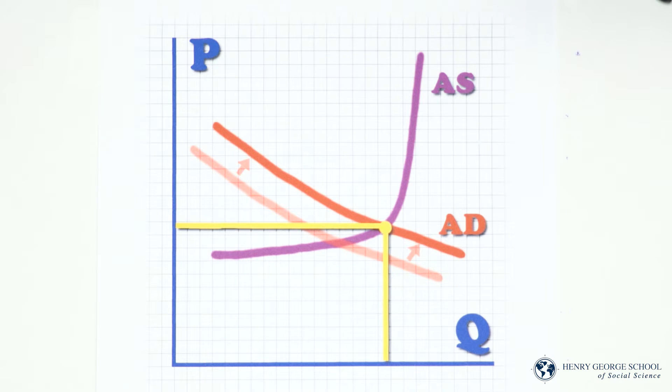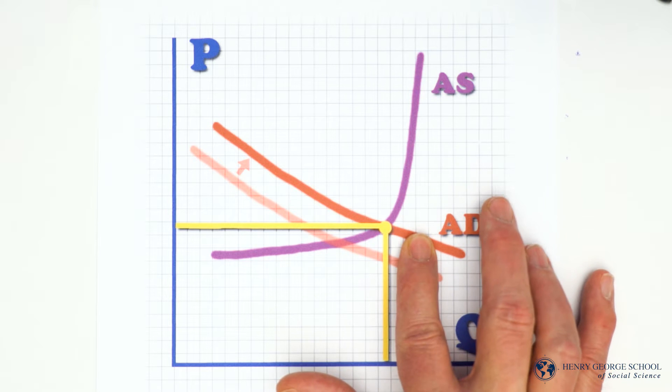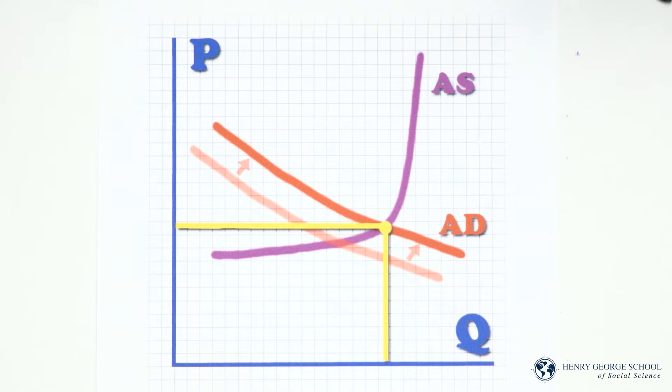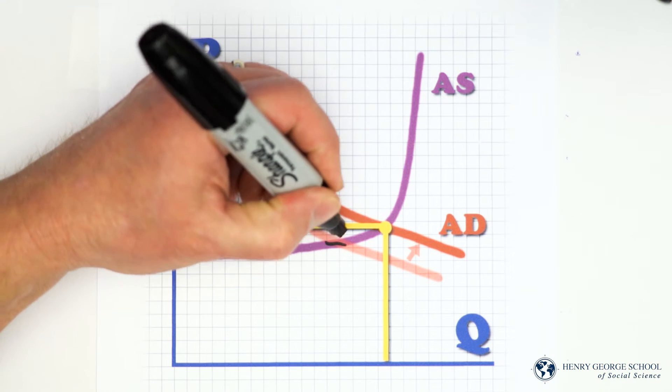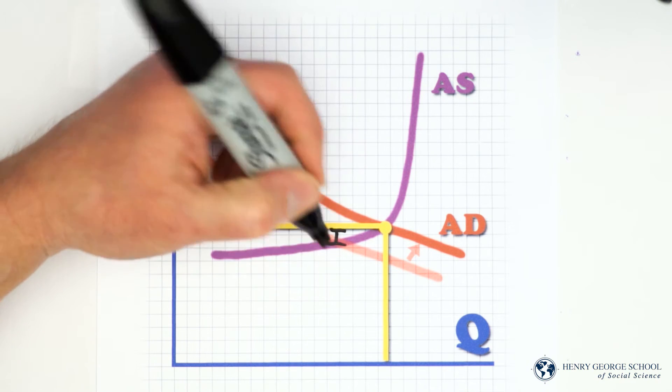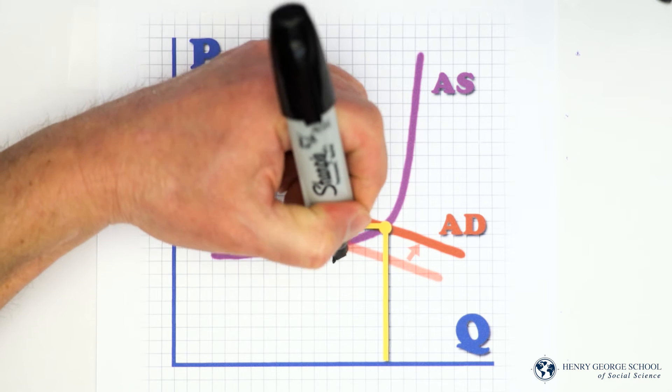As things start out, let's say times are good. People have jobs, they're making good money, houses are being built, and parents are buying their kids lots of Christmas presents. People want more stuff, and they're willing to pay for it. So the demand curve shifts up. There's more demand for goods and services. Note the new point of equilibrium. Prices have increased, but only very modestly. Output has increased quite a bit more.